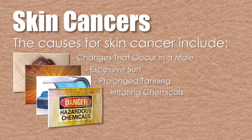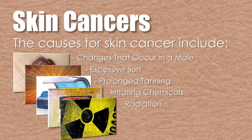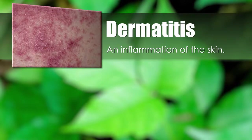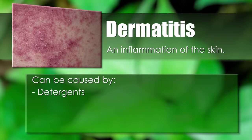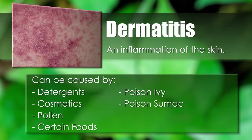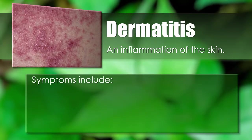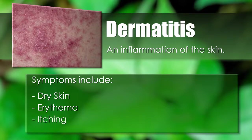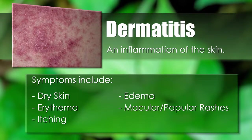Irritating chemicals or radiation can also cause skin cancer. Dermatitis is an inflammation of the skin and can be caused by exposure to detergents, cosmetics, pollen, or certain foods, as well as contact with poison ivy, poison sumac, or poison oak. Symptoms include dry skin, erythema, itching, edema, macular papular rashes, and scaling.